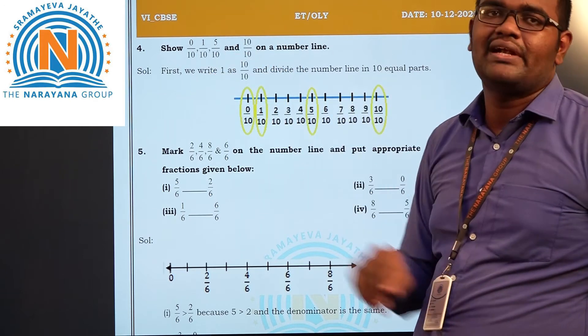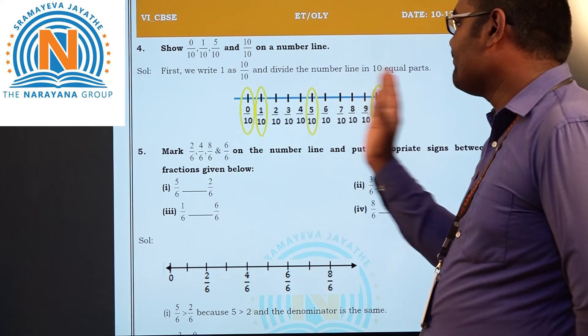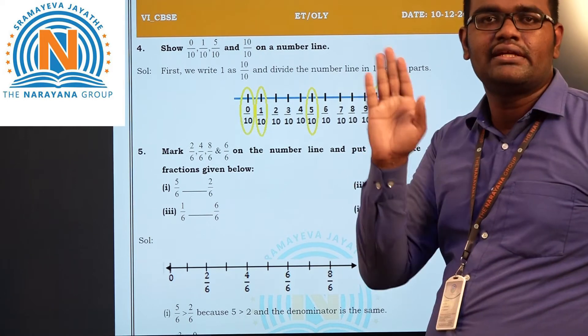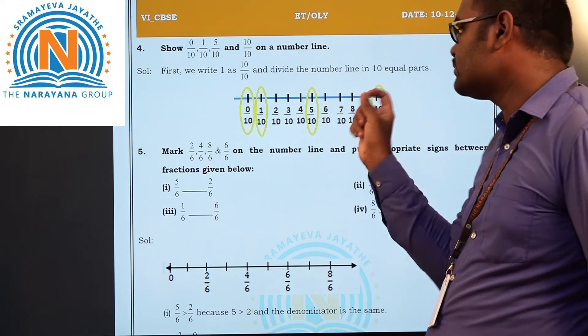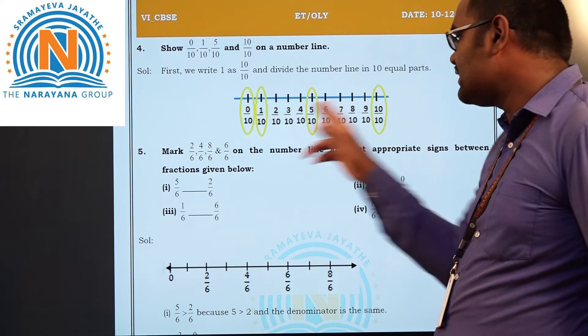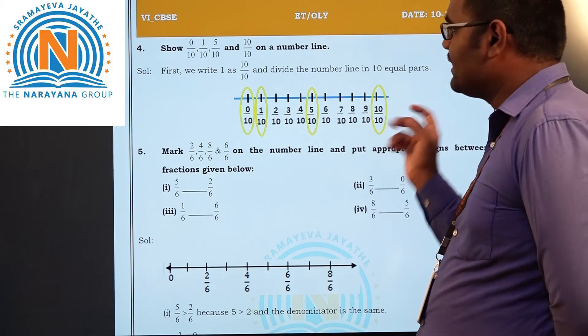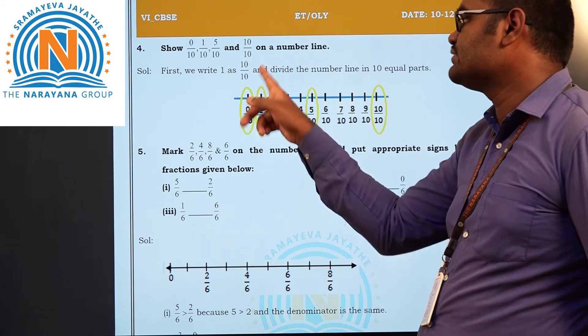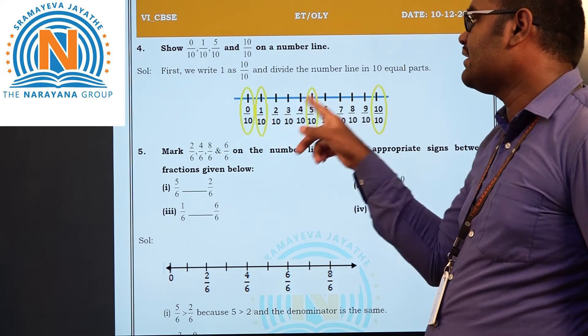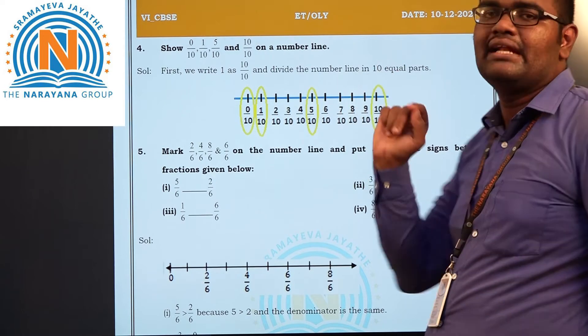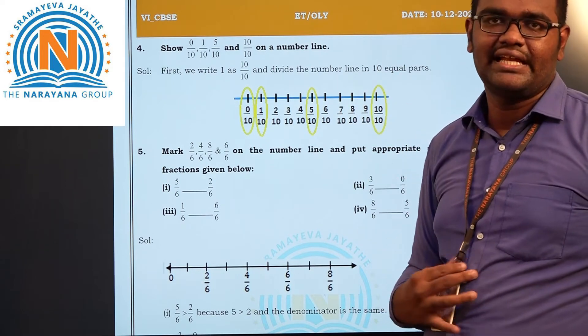From 0, 1, 5, 10, the numerators are there. So divide a number line from 0 to 10 equally, 1 centimeter each like 0, 1, 2, 3, till 10. Divide all the values by 10. If you divide all the values by 10, easily you can mark 0 by 10, 1 by 10, 5 by 10, and 10 by 10. Clear students?